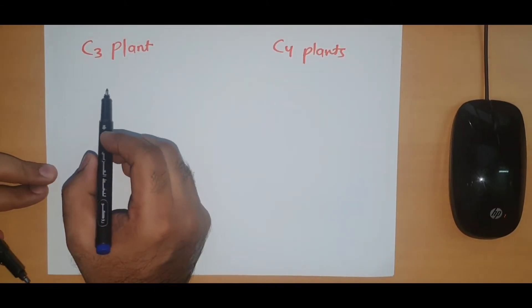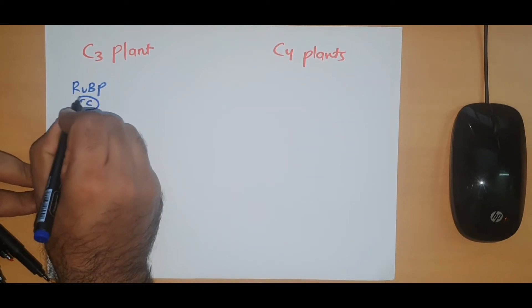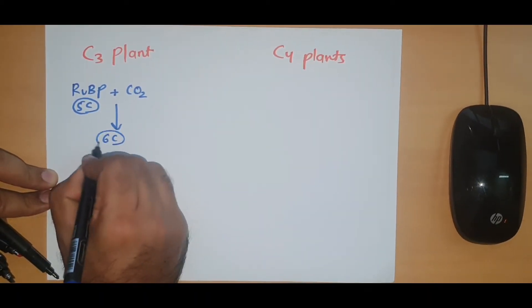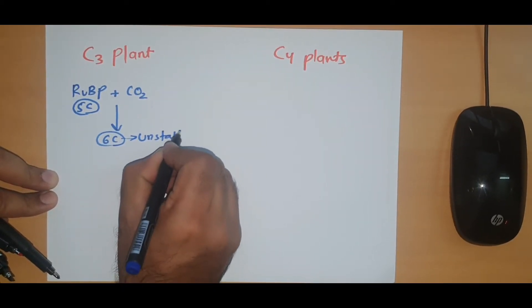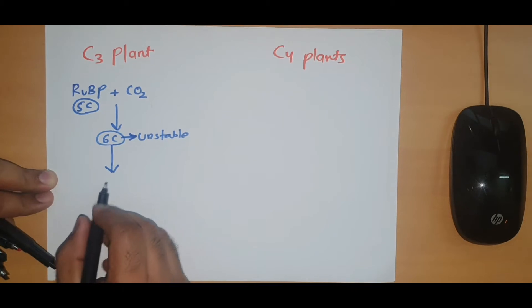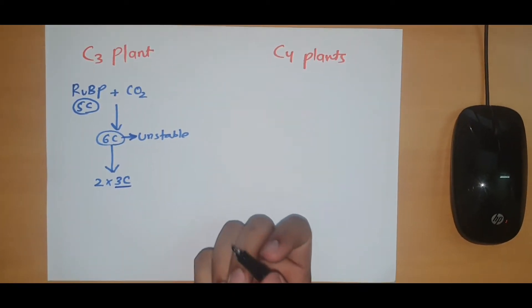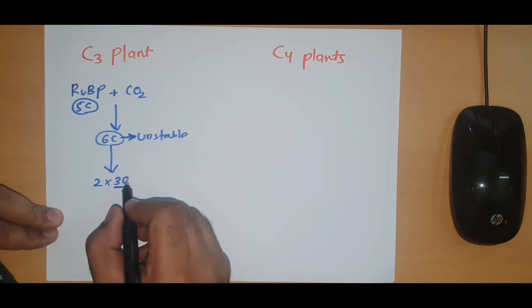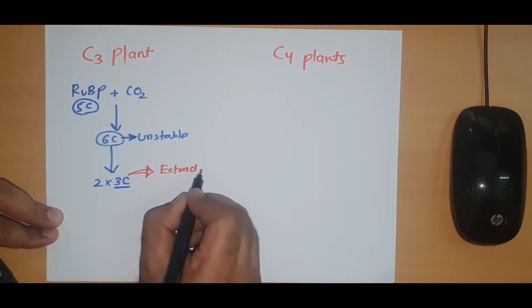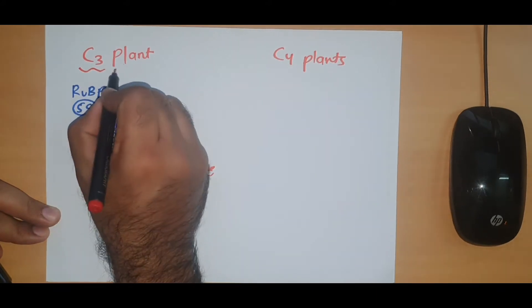In C3 plants, if you remember the last lecture, the ribulose bisphosphate which is a 5-carbon compound, when it joins with carbon dioxide it forms a 6-carbon compound which is unstable. Right away this unstable 6-carbon compound breaks down into two molecules of 3-carbon compounds. The first extractable molecule is a 3-carbon compound, and that is why these plants are called C3 plants.